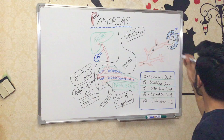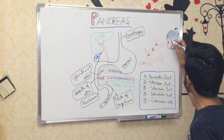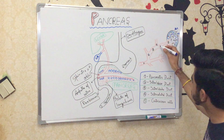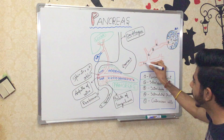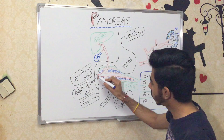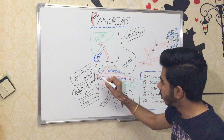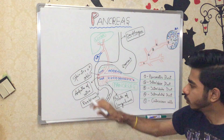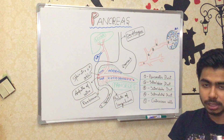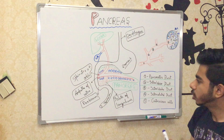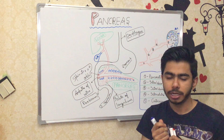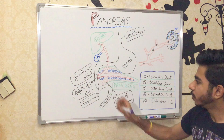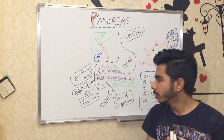These enzymes will flow through the centroacinar cells, then the intercalated duct, interlobular duct, interlobar duct, and finally the pancreatic duct. This pancreatic duct meets with the duodenum at the point of the ampulla of Vater. Surrounding the ampulla of Vater is the sphincter of Oddi — specialized muscles that control the regulation of how much enzyme should go into the duodenum.